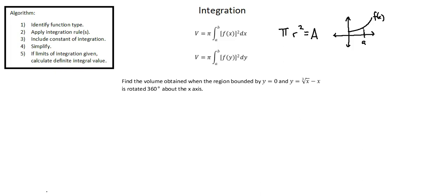Let's move on to our example. Find the volume obtained when the region bounded by y equals zero and y equals the cube root of x minus x is rotated 360 degrees about the x-axis. To begin, I'm going to create a diagram. Usually, you'll be given a diagram. If not, it is helpful to create one.